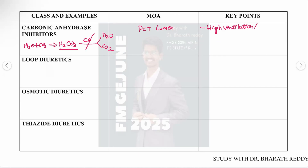Carbonic anhydrase inhibitors can also be used in patients suffering from metabolic alkalosis, respiratory alkalosis, and acute angle-closure glaucoma.